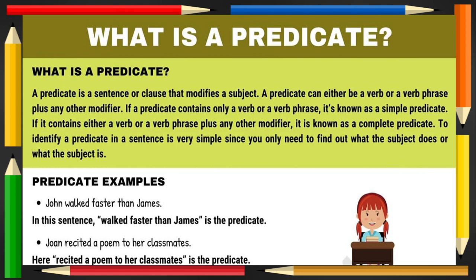What is a predicate? A predicate is a part of a sentence or clause that modifies a subject. A predicate can either be a verb or a verb phrase plus any other modifier. If a predicate contains only a verb or a verb phrase, it's known as a simple predicate. If it contains a verb or verb phrase plus any other modifier, it is known as a complete predicate. To identify a predicate in a sentence is very simple — you only need to find out what the subject does or what the subject is.